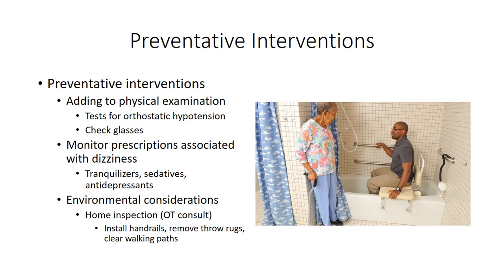In addition to strategies to prevent the onset of frailty, additional strategies serve to prevent falls and fractures in a frail population. Simple additions to a routine physical exam can identify treatable issues that could increase fall risk. A careful assessment of a patient's prescriptions could identify adverse side effects and drug-drug interactions that may lead to loss of balance and falls, and alternative approaches may be identified to minimize these adverse effects. The physician should also reach out to occupational therapists, who can assess the patient's home and work environment for tripping hazards and make modifications to minimize fall risk.